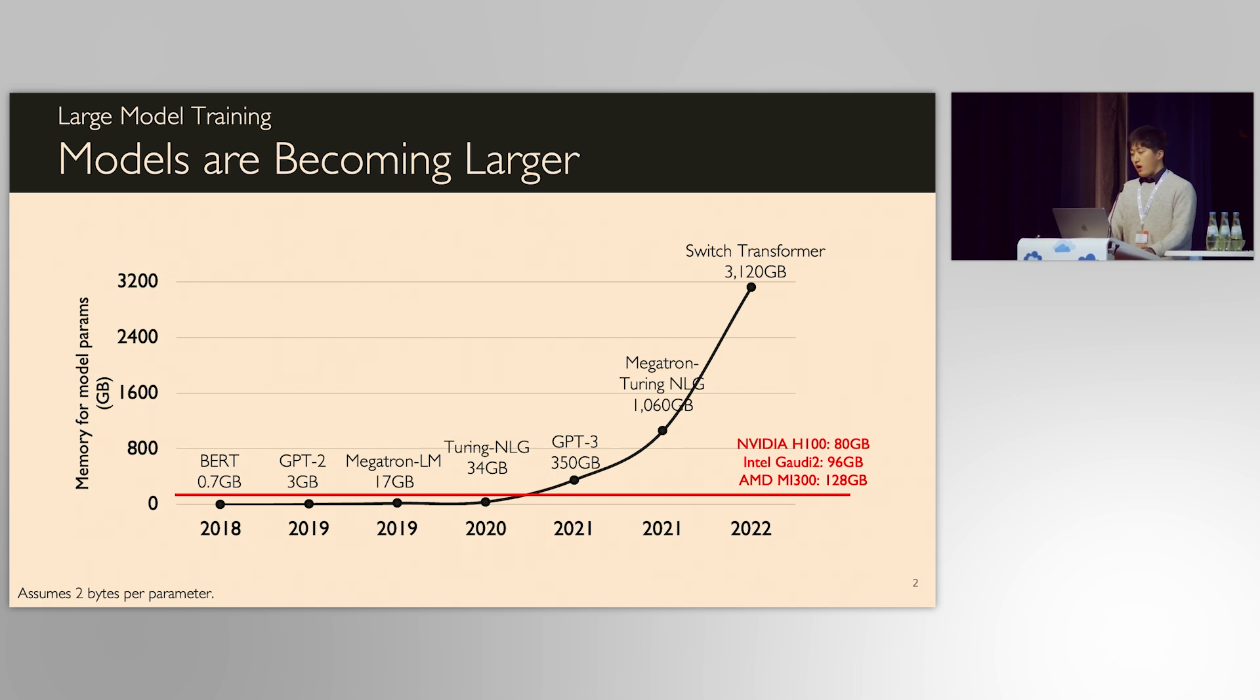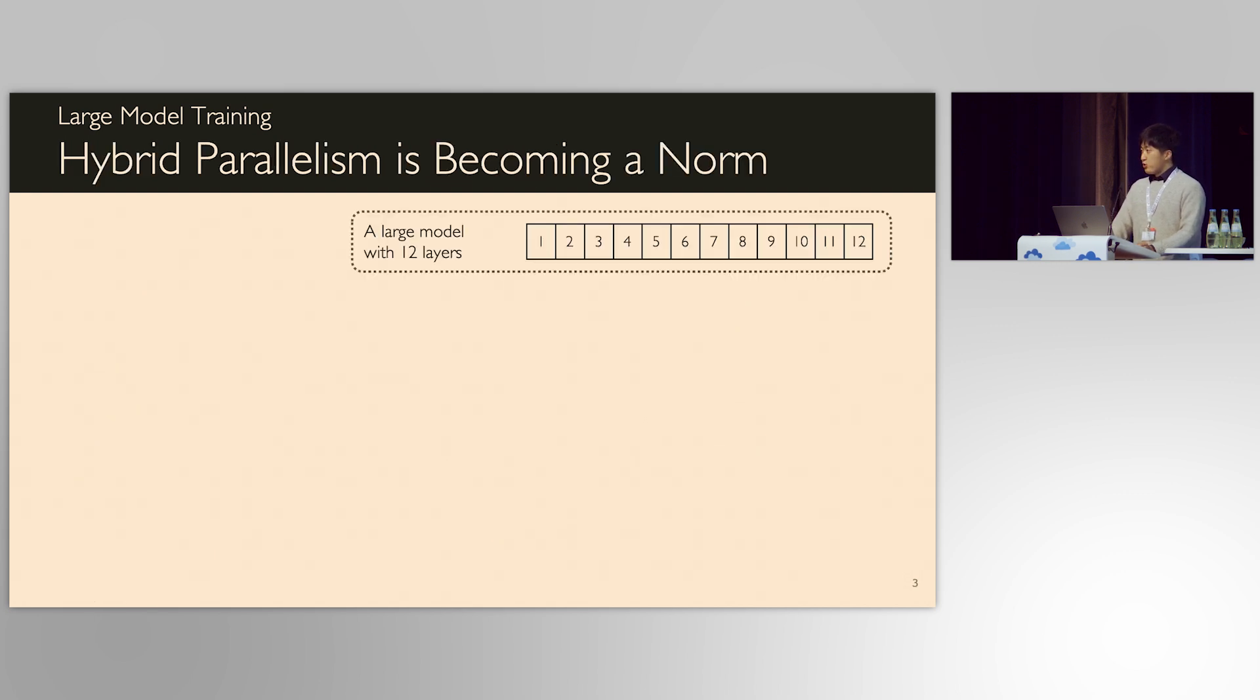Today's models are getting larger and larger, so even a single latest GPU cannot store all model parameters in its memory. Naturally, we started thinking about splitting and distributing model into multiple GPUs.